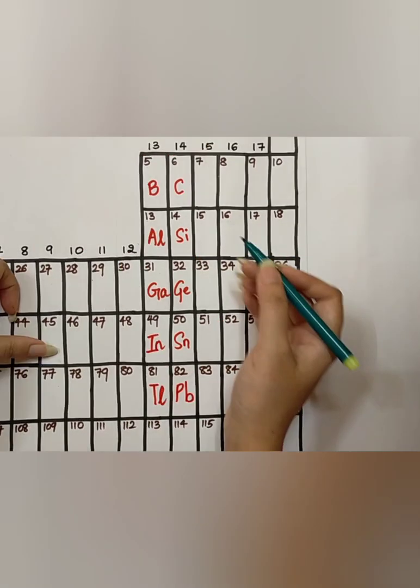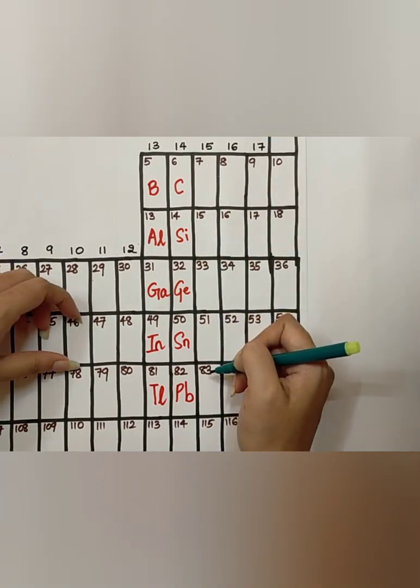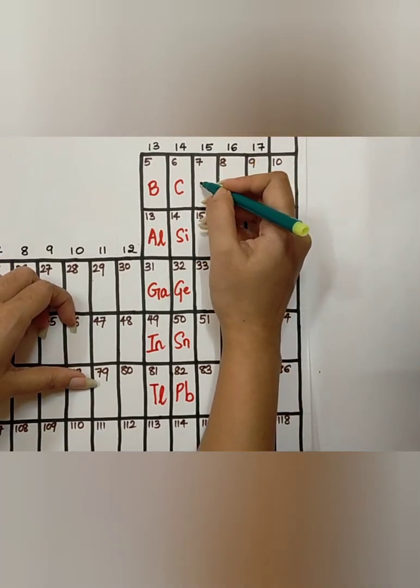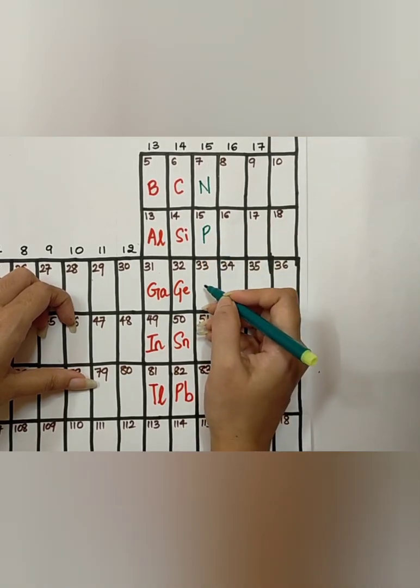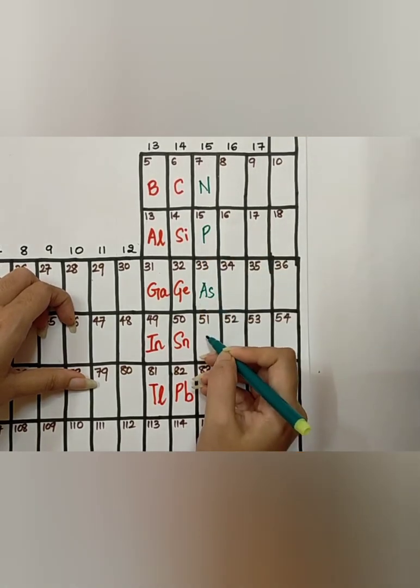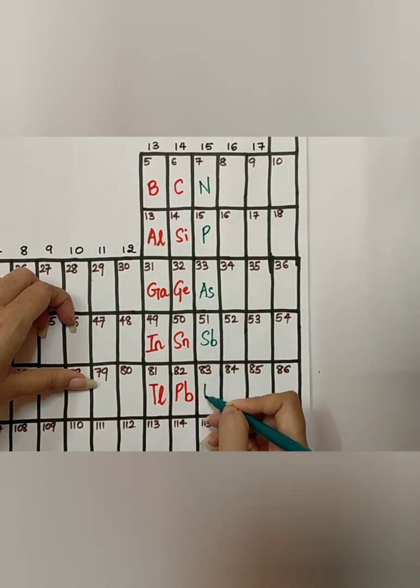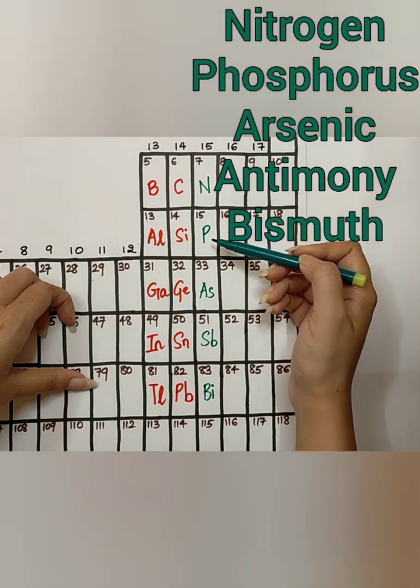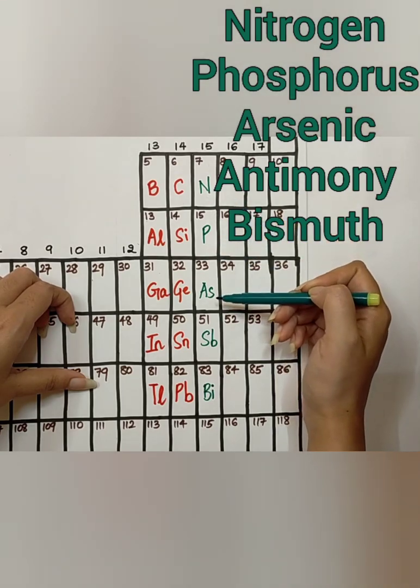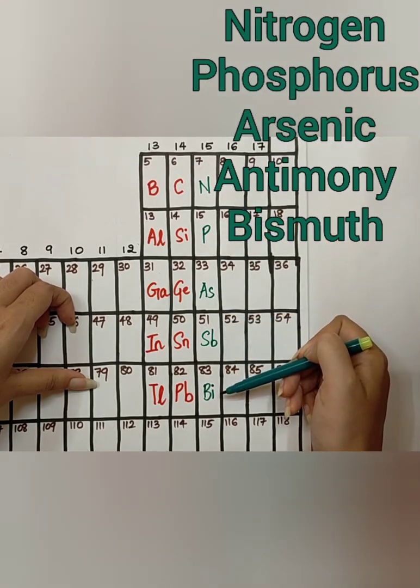For group 15, you will remember, Night Angle, Parrot, Aise, Sub, Burbs. And the elements are, Nitrogen, Phosphorus, Arsenic, Antimony, Bismuth.